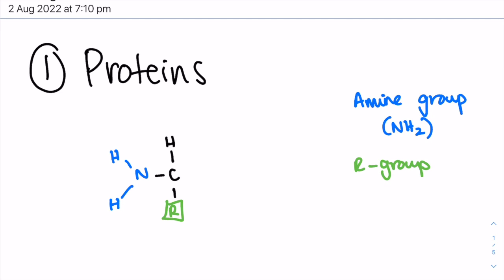So there's actually 20 R groups, meaning that there are 20 possible amino acids available. And this is actually how multiple proteins are created, because there are so many different combinations of amino acids that can be linked to each other due to these R groups.